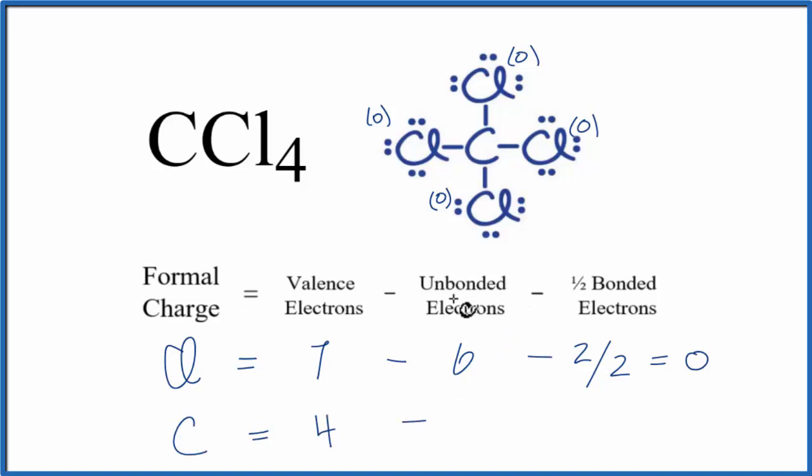We'll subtract the unbonded valence electrons. All of these electrons around the carbon are involved in chemical bonds. We don't have any unbonded valence electrons.